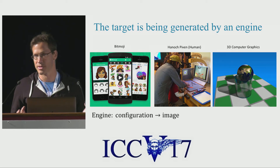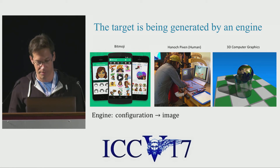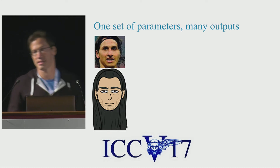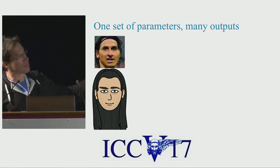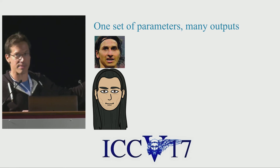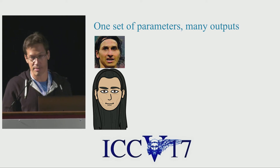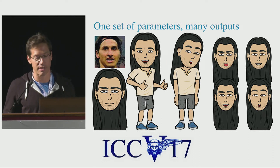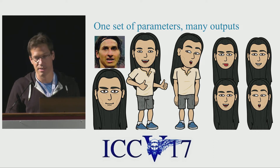This is a very common scenario. For example, in 3D computer graphics there is a file describing the image and you get the 3D scene. The biggest advantage of working this way is that if we can recover the parameters that enable us to generate an image, we can use those same parameters to generate many different views of the same scene and many different expressions.